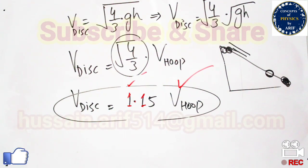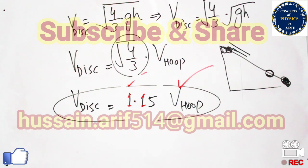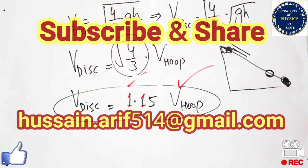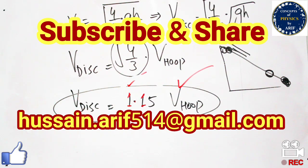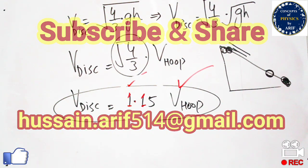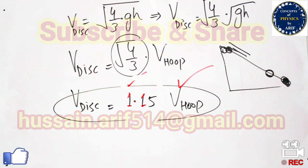Up till now we have finished the relationship between the velocity of a disk and the velocity of a hoop. We also discussed rotational kinetic energy for a disk and for a hoop separately. If you like my video, please subscribe to my channel. I have put all related video links in the description, and my email address is available if you want to contact me. See you soon, bye bye.